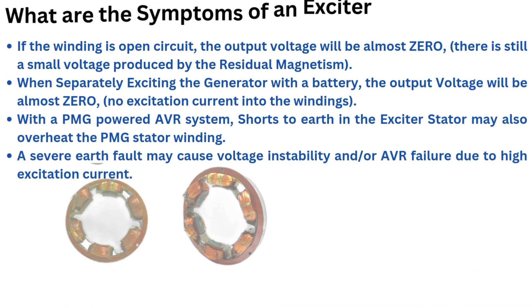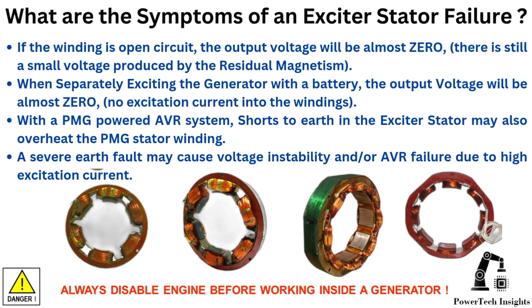In this video, we will provide a comprehensive guide on fault diagnosis for the exciter stator. Possible Symptoms of an Exciter Stator Failure: If the winding is open circuit, the output voltage will be almost zero, but there is still a small voltage produced by the residual magnetism. When separately exciting the generator with a battery, the output voltage will be almost zero with no excitation current into the windings.